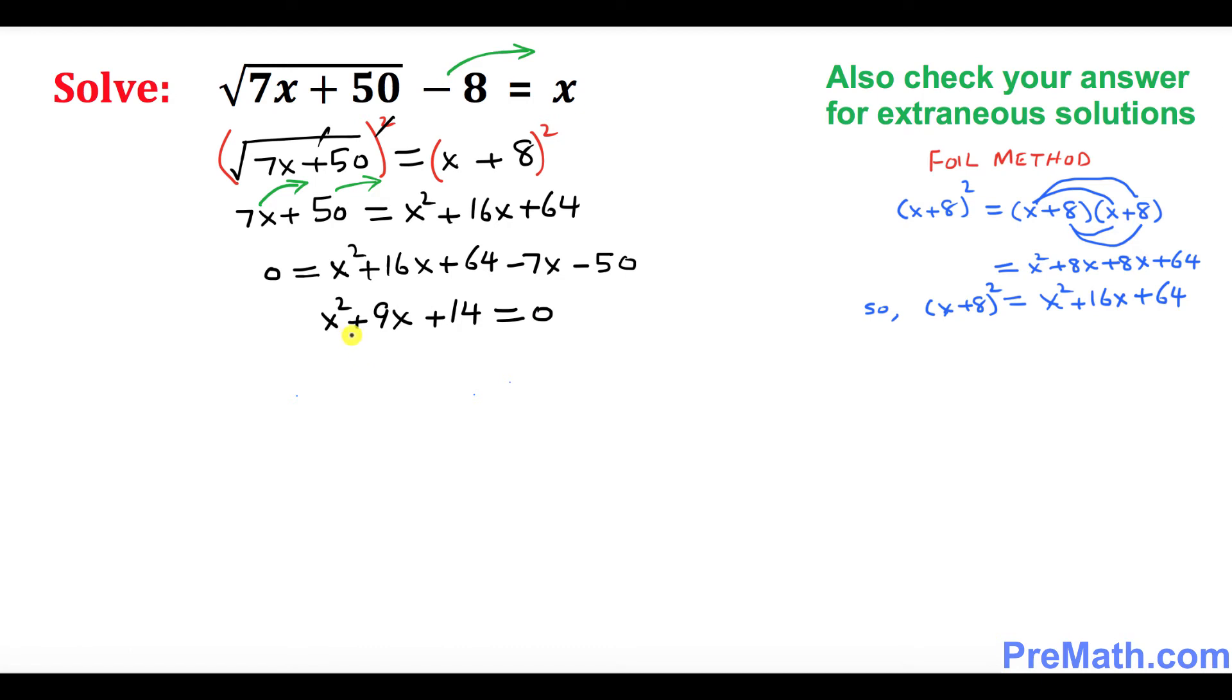This is a quadratic equation that can be easily factored out. The factors are x plus 2 and x plus 7. So x plus 2 equals 0, and x plus 7 equals 0. That means x equals negative 2 is one of our solutions and x equals negative 7 is another one.